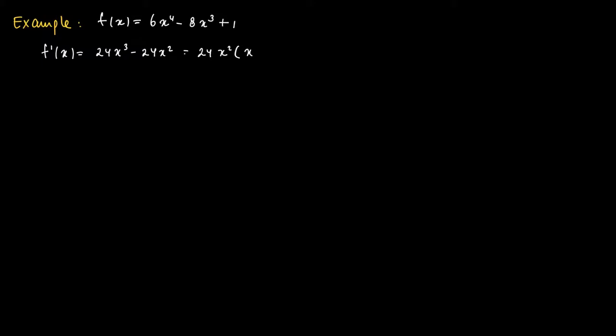First of all, the derivative is given by 24x squared times (x minus 1). This is a straightforward calculation, so we see that we have two stationary points, one at 0 and one at 1.